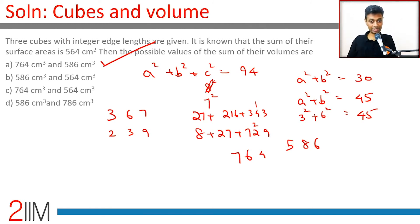Choice A, wonderful! You're through. Just trial and error. We know that a square plus b square plus c square is 94. A, b, c are integers. Methodically go step by step.